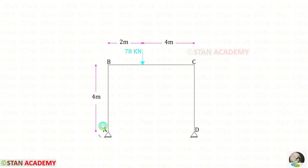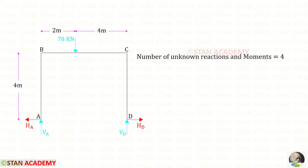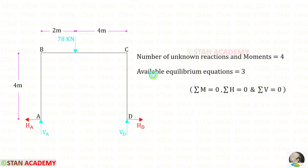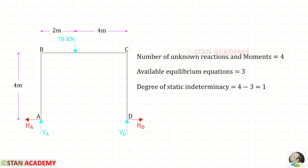At points A and D there are hinged supports. In this frame, the number of unknown reactions and moments is 4: two vertical reactions and two horizontal reactions. The available equilibrium equations are 3. So the degree of static indeterminacy will be 4 minus 3, which equals 1.